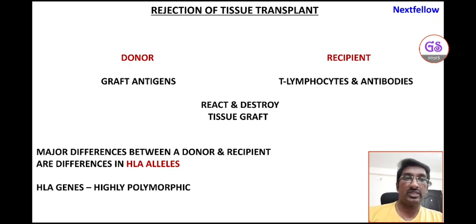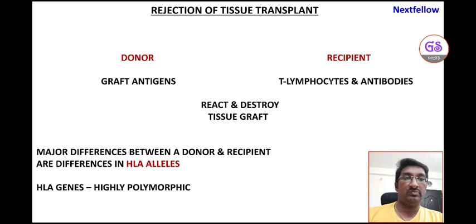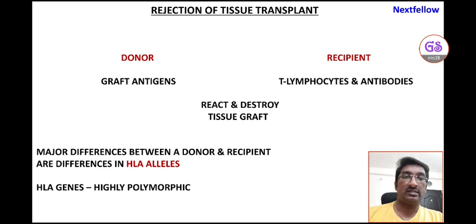This short video is on the rejection of tissue transplant, also called graft rejection, tissue transplant rejection, or graft failure. Rejection is a process where the recipient's immune system — comprising T lymphocytes and antibodies — reacts against the graft antigens that are being transplanted into the recipient, ultimately destroying those antigens and causing graft failure.